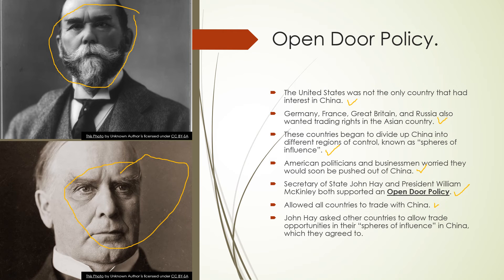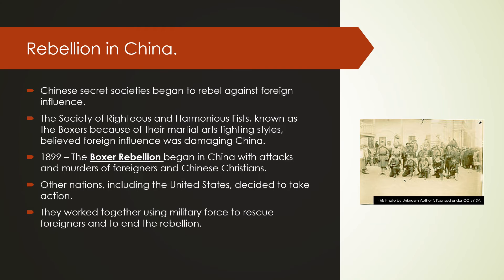John Hay asked other countries to allow trade opportunities in their spheres of influence in China, and they agreed. This opened up trade in China for all countries, including the United States, so no country was limited to only its own sphere.